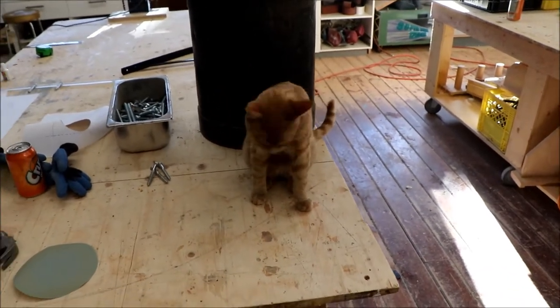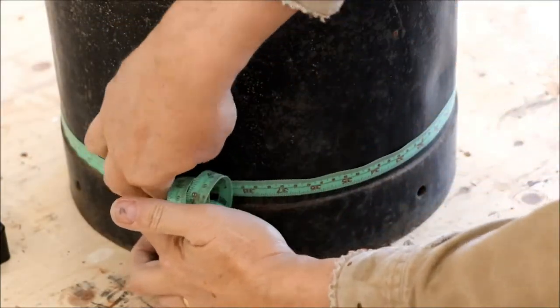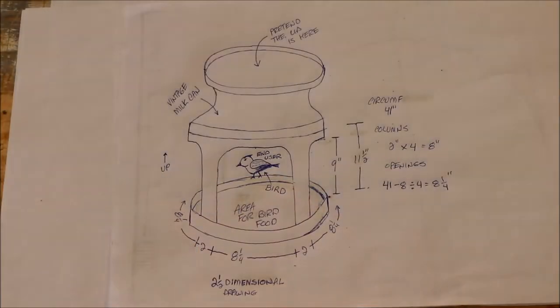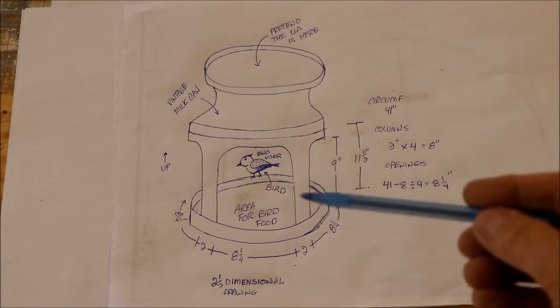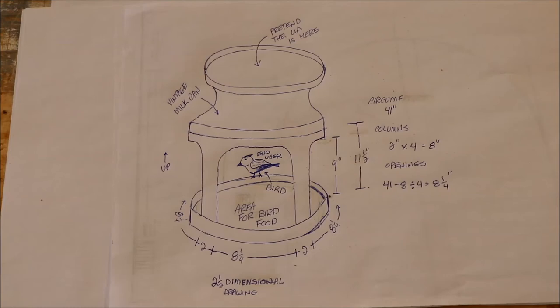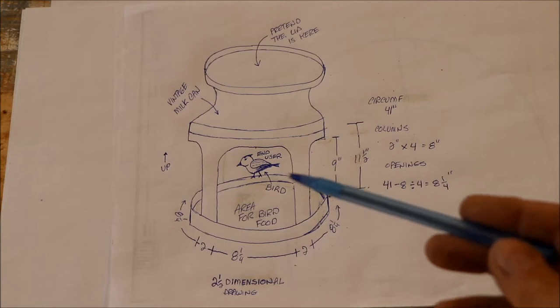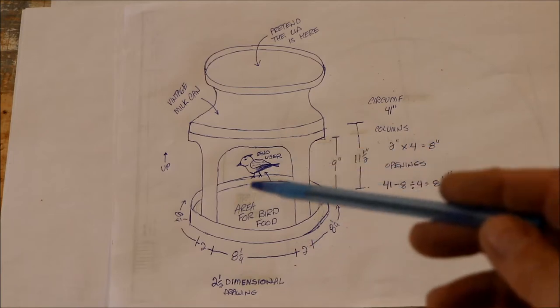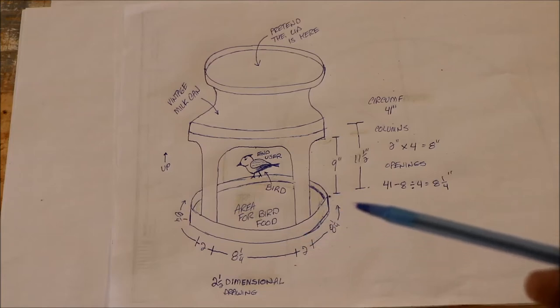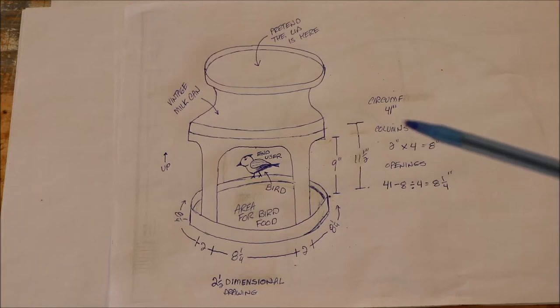This is my idea for the fly-through bird feeder. We take a vintage milk can and cut some openings on the side. The circumference of the entire can at the bottom is about 41 inches. We'd like four openings, and I'm thinking the columns should be around two inches wide. For four openings, it's circumference (41 inches) less the columns (2 inches times 4 equals 8 inches), so 41 minus 8 divided by four openings gives you a measurement of 8 and a quarter inches.